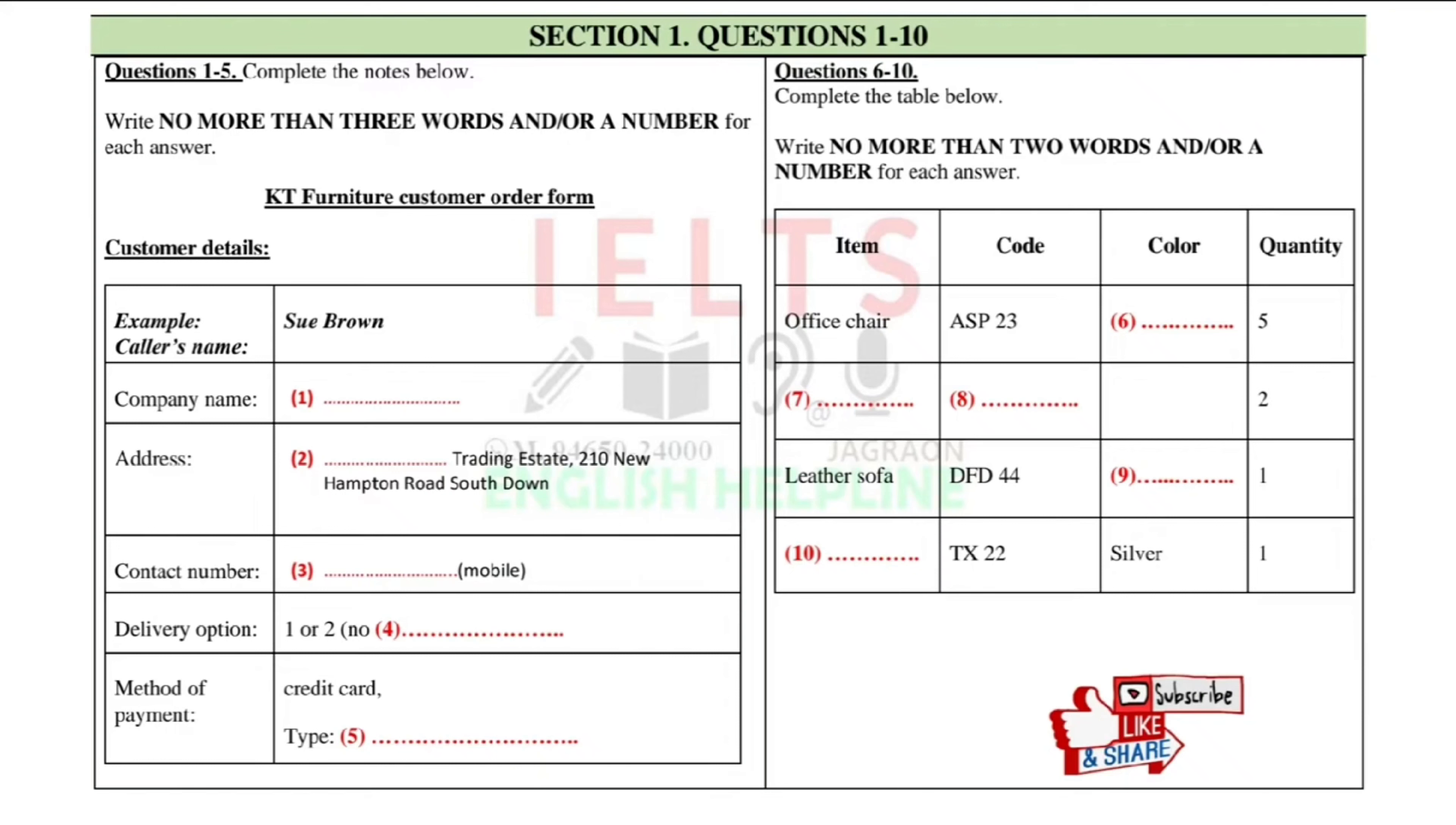Anything else? A coffee table, perhaps? Yes, I think so. Maybe TX22, the silver one? A very good choice. Well, that's it, I think. OK. I'll just add that up for you and then take your credit card details. You now have half a minute to check your answers.